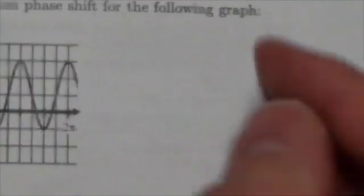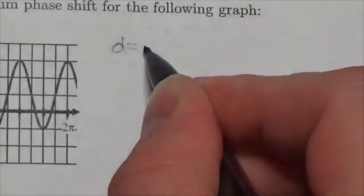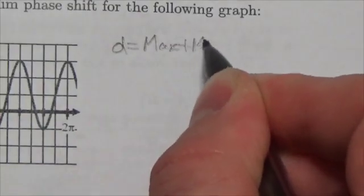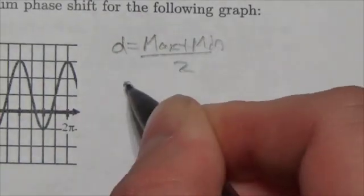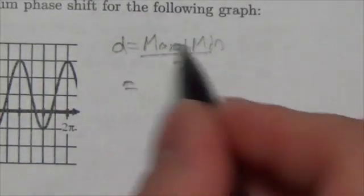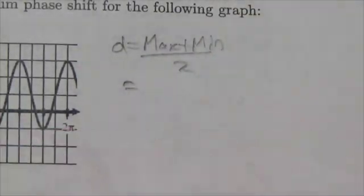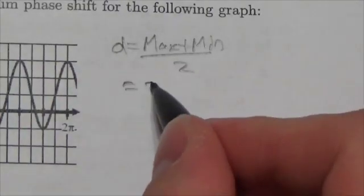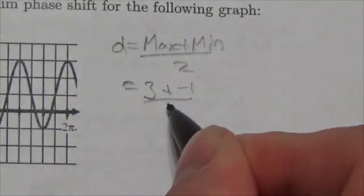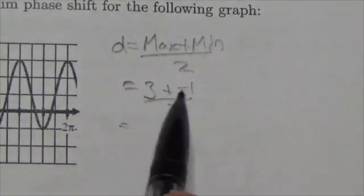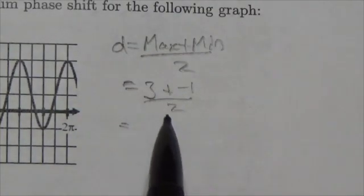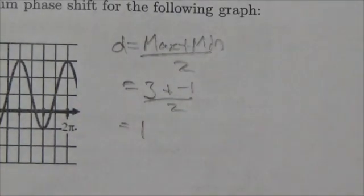The d value is going to be max plus min over two. It's more like an average between the two here. And this is the middle, the vertical middle of the graph here. And so in this case here, that's going to be three plus negative one over two. Three plus negative one is two divided by two is one.